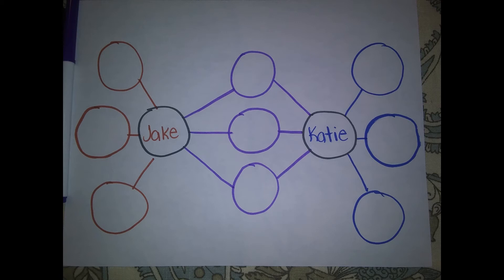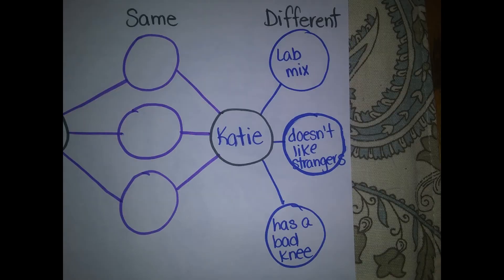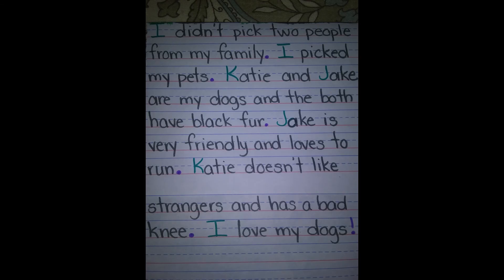Then I turned my planning into a story in my notebook. I told who my story was about at the beginning. Then I told two ways they are alike and two ways they are different. At the end, I chose to close my story with a sentence about how I feel about these two.